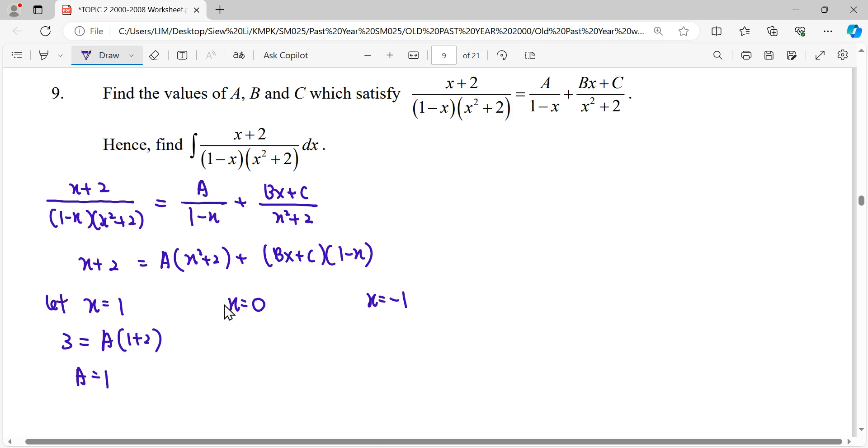When x equals to 0, we use here. Then 0 times B plus C. From here we can find out our C which is 0.